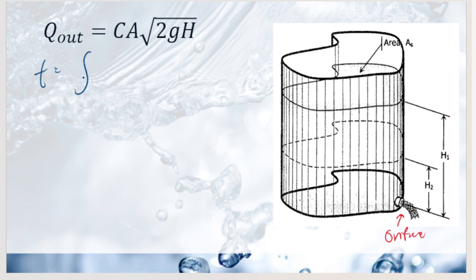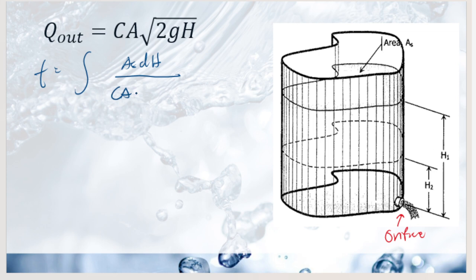This is the formula used for unsteady flow. If the head range is definite, we don't need to integrate further — we just apply the discharge formula from orifice theory. For a single tank with unsteady flow, this is our working formula.